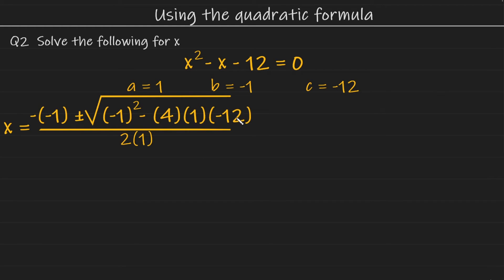And then here again, be very careful. You are going to do 4 times 1, which is 4 times negative 12, which is negative 48. So you're going to be subtracting a negative number, subtracting negative 48.